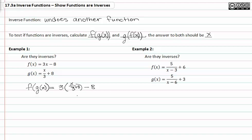We can rewrite this as x plus twenty-four minus eight. So f(g(x)) is equal to x plus sixteen.